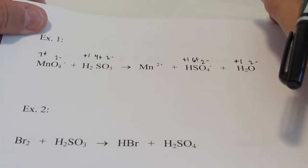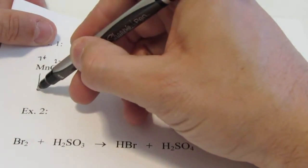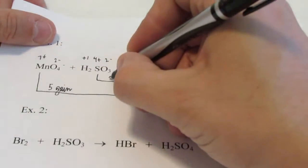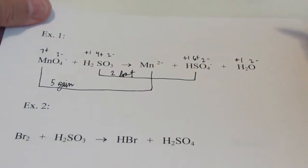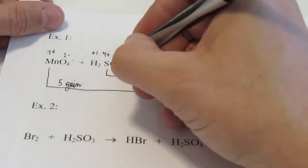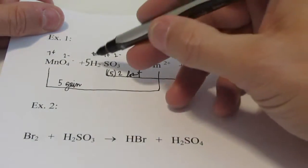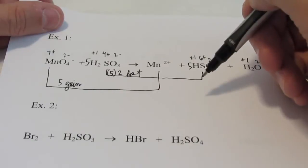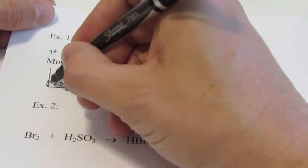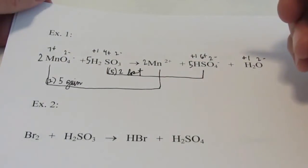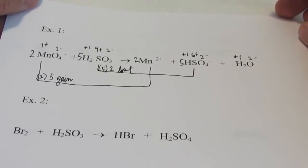Step two: balance electrons gained with electrons lost. Manganese went from 7⁺ to 2⁺, so five electrons were gained. Sulfur went from 4⁺ to 6⁺, so two electrons were lost. Those numbers need to balance, so I need a multiple of five and two — I'll choose ten. I'm going to quintuple the sulfur-containing species: put a five here and a five there, so now five sulfurs each losing two electrons equals ten lost. And I'll double the manganese-containing species: put a two here and a two there — each manganese gains five, and with two of them, ten are gained. Step two is finished.